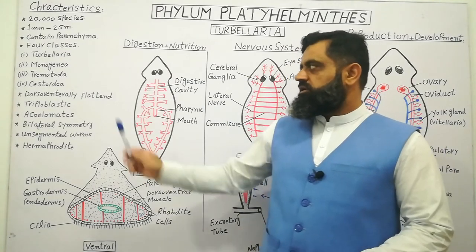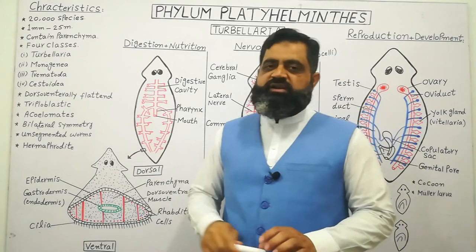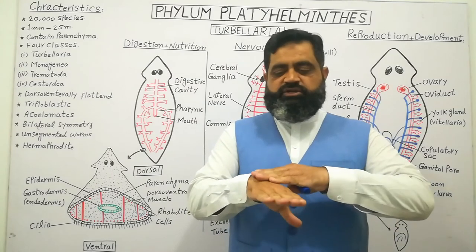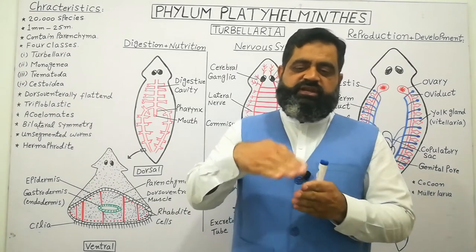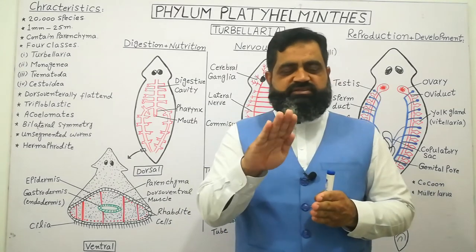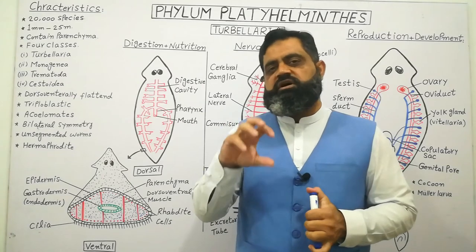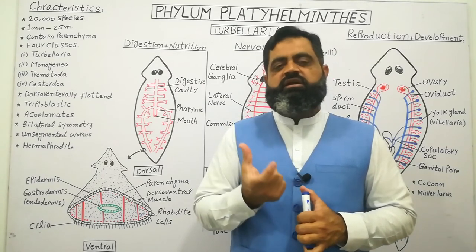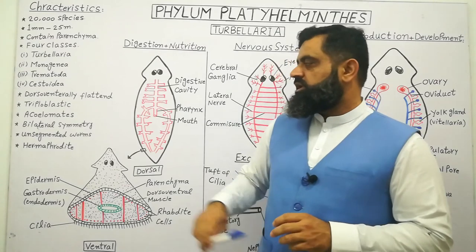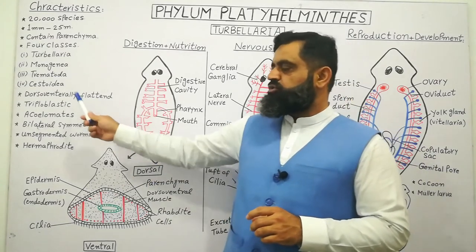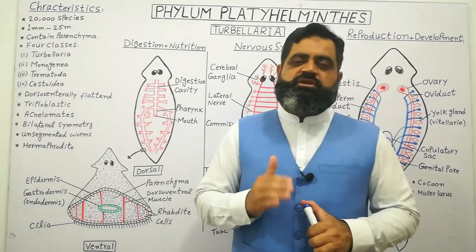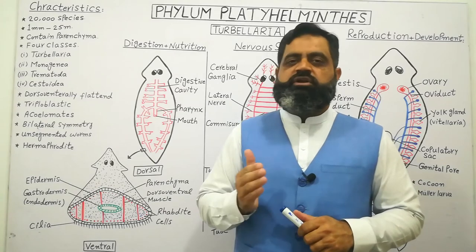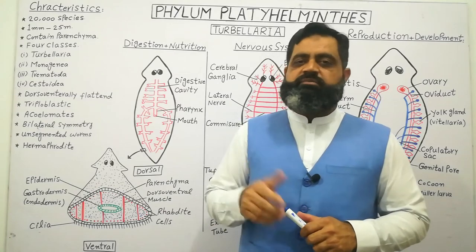These animals are dorsoventrally flattened, just like a hand which has a dorsal surface and a ventral surface. So these animals are worms which are dorsoventrally compressed, just like a leaf. They are also known as triploblastic animals because their body contains three layers: ectoderm, endoderm, and mesoderm.